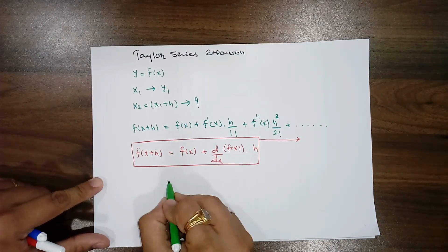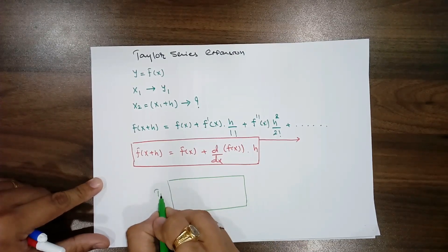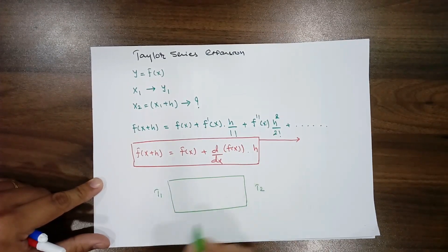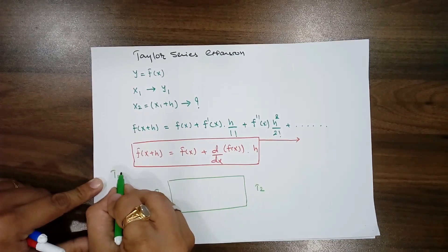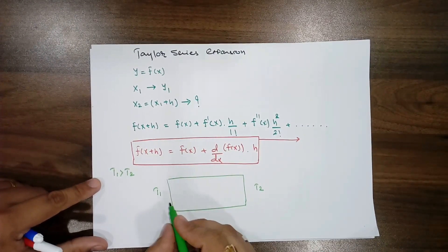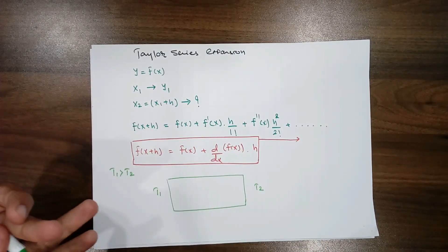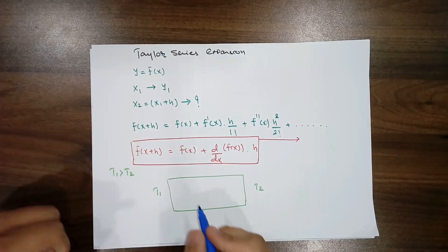Let us consider one slab, one side temperature is T1, another is T2, and here the temperature T1 is greater than T2. It means the heat is traveled from this T1 side to the T2 side, and if we arbitrarily consider one plane.